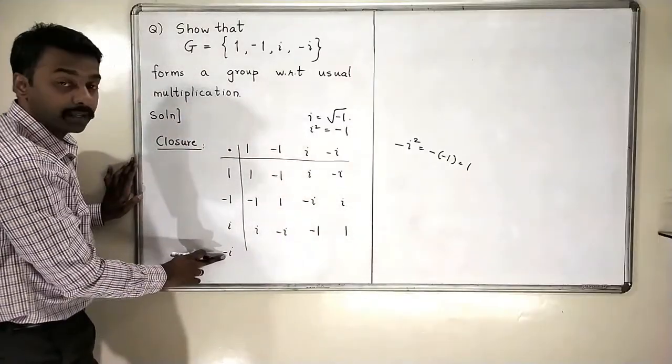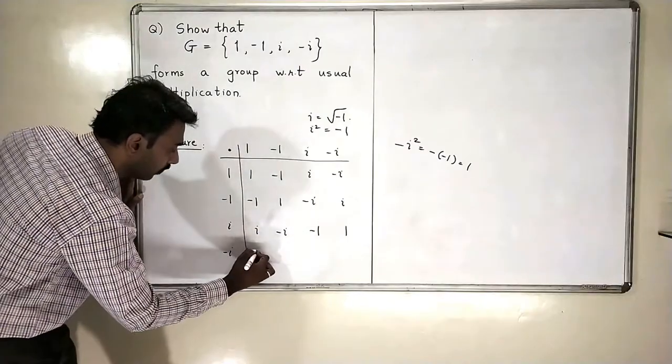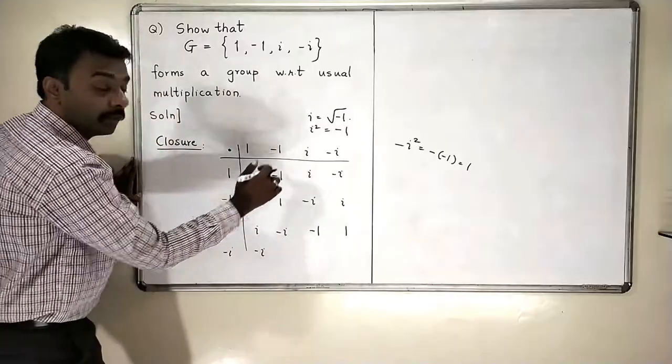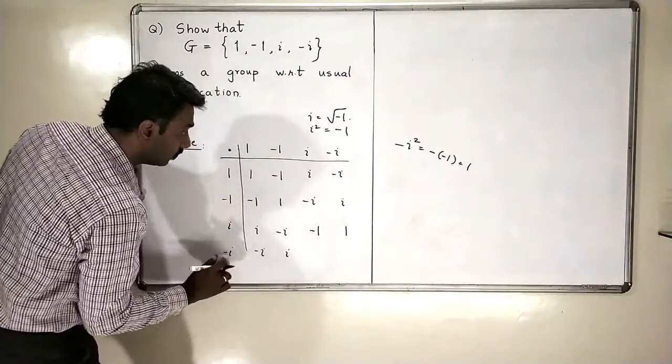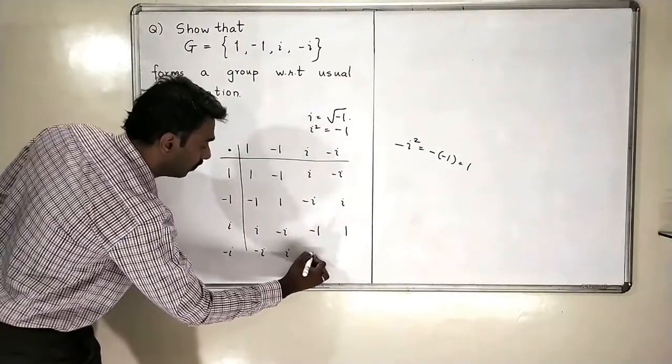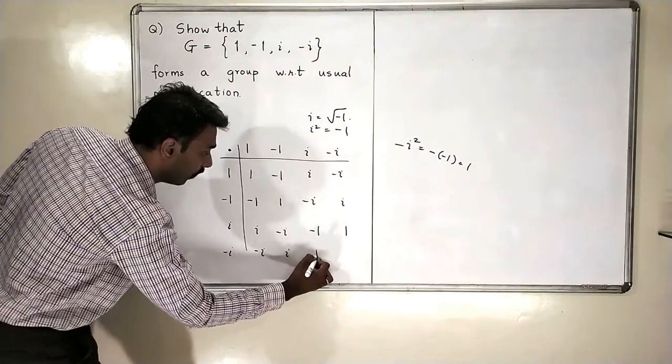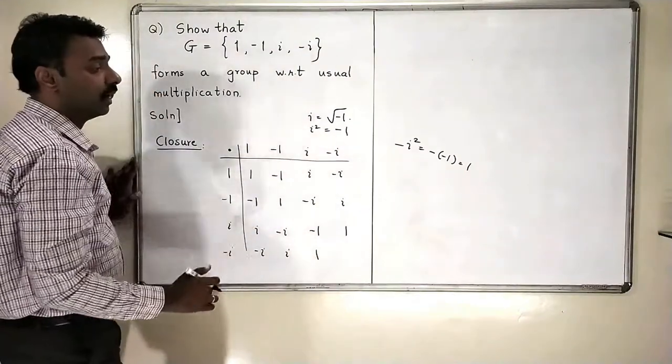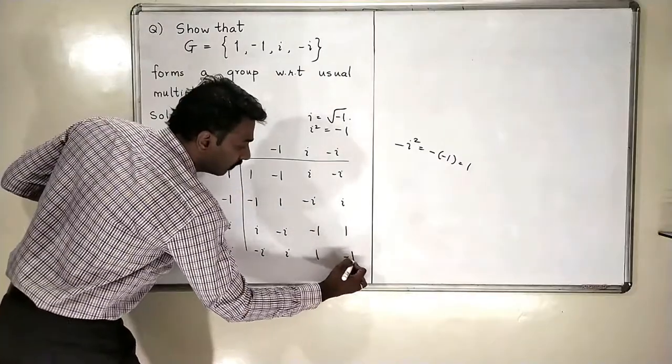When I multiply minus i to all these elements, minus i multiplied by 1 is minus i. Minus i multiplied by minus 1 is i. i into i is minus 1, so it will get 1. And minus i into minus i is i square, which is, again, minus 1.